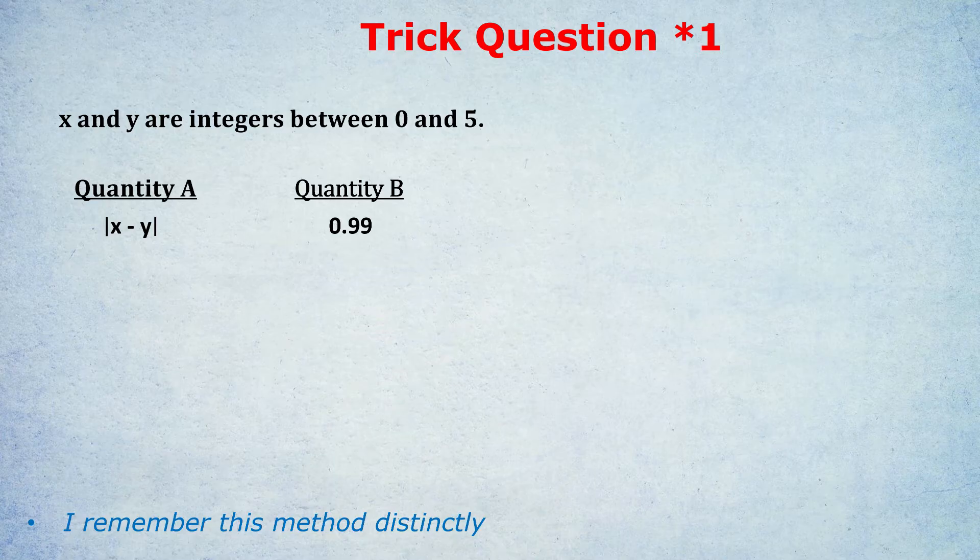So again, Quantity A is bigger. And after a while people would see that the numbers they're picking always give Quantity A as being bigger, and they'd pick Quantity A.